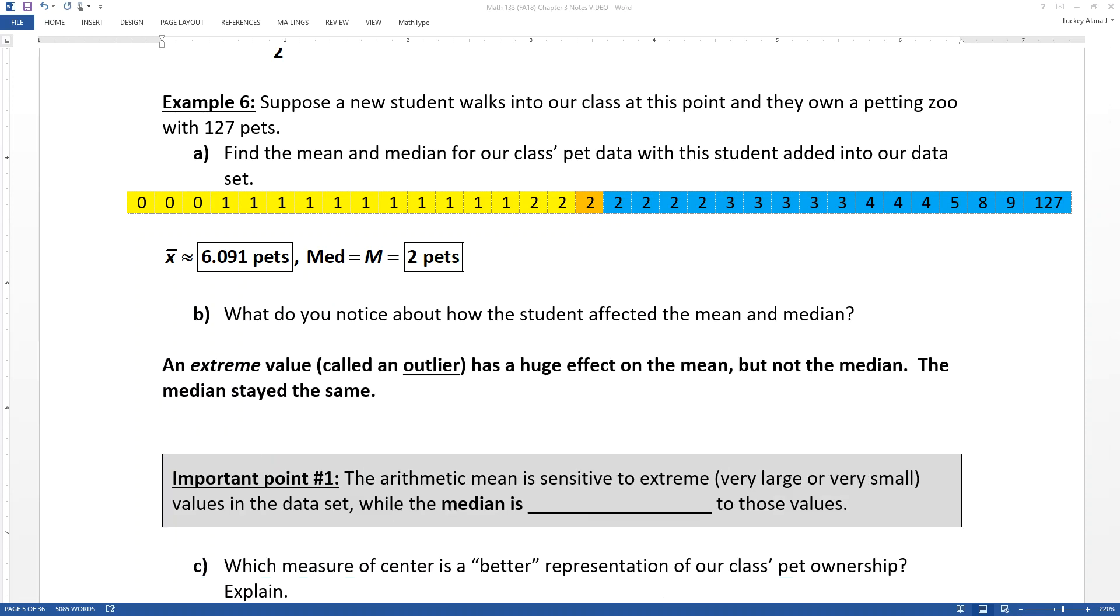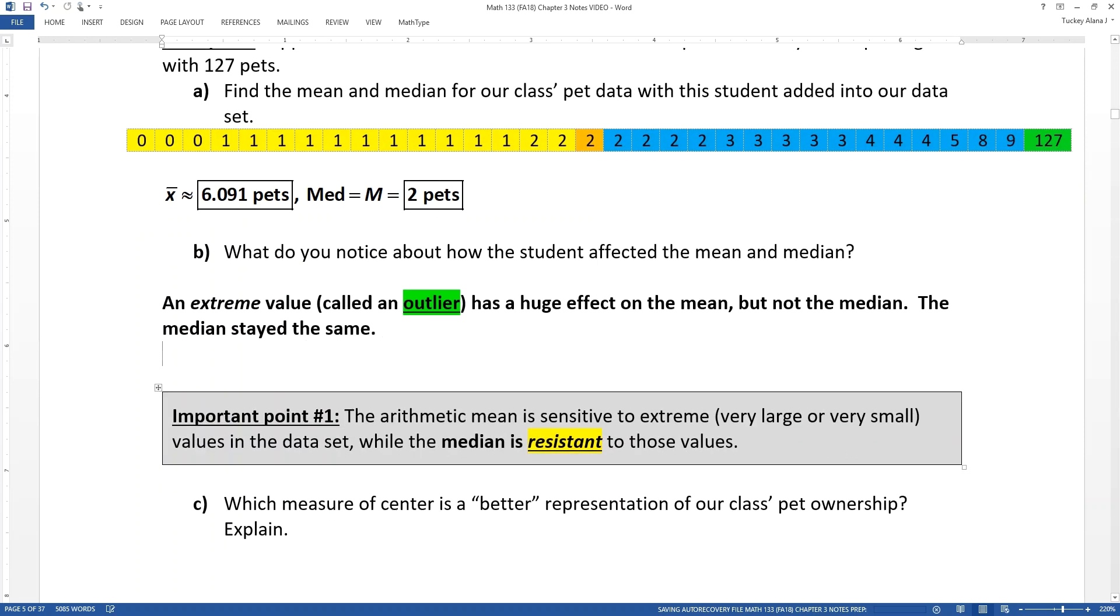That's what we say. The median resists the pull of that outlier. The outlier being the 127. And I highlighted it in green so you could see. So that 127 is an outlier. It's way far away from the rest of the data set. It's called an extreme value. It's hugely different than the rest of the data set. And you can have them on the high side or the low side again, but this one was a high one. And it had this huge effect on the mean, but didn't really affect the median at all. The median stayed the same.